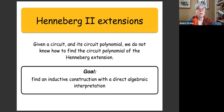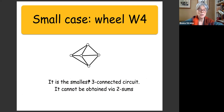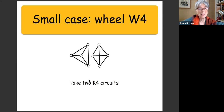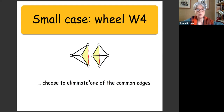The combinatorial resultant is actually a generalization of the two-sum. Here's the smallest three-connected case. We start with two K4 circuits; instead of identifying one edge, we assume they have a common triangle, and within that common triangle we choose to eliminate one of the common edges. We put these graphs together, eliminate that edge, and obtain the wheel on four vertices. In general, the operation works on two graphs overlapping in at least one edge — the combinatorial resultant is the union of edges with the common edge E deleted.